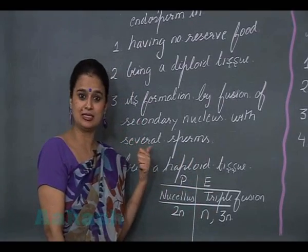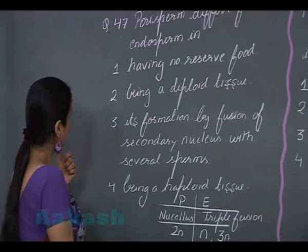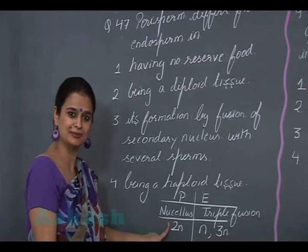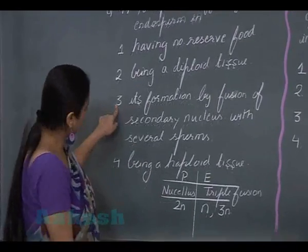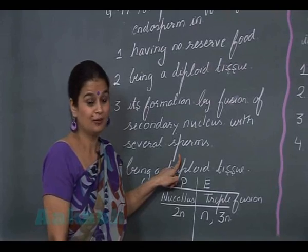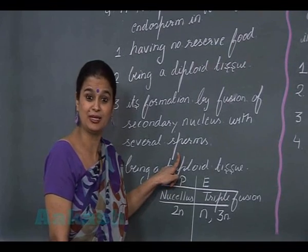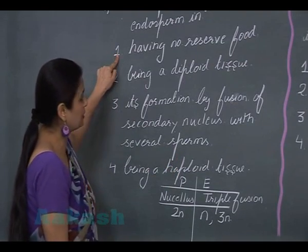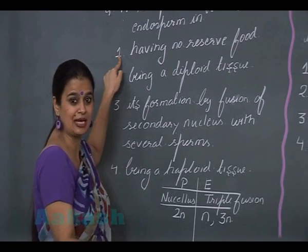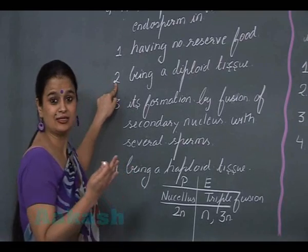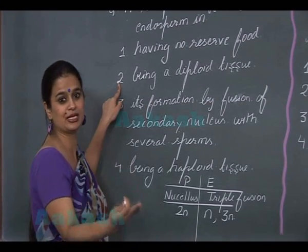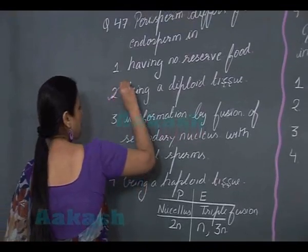Both perisperm and endosperm have reserved food, so that is not a difference. Perisperm is diploid (2N). The option about fusion of secondary nucleus with sperm refers to triple fusion, which is required for endosperm formation, not perisperm. Reserve food is present in both, so it is not a difference. The correct answer for question 47 is option 2: perisperm is diploid and endosperm can be haploid or triploid.